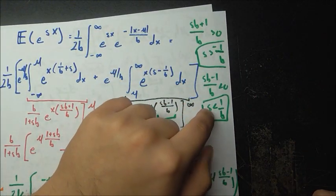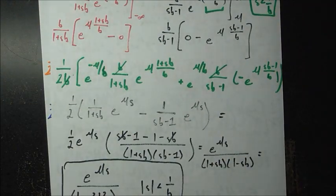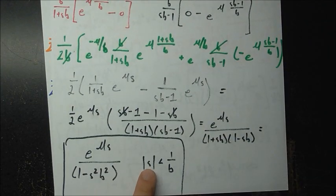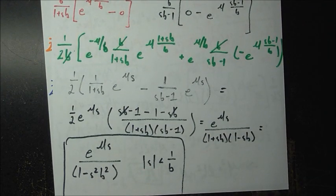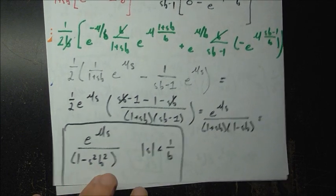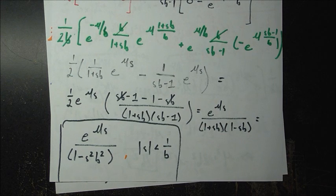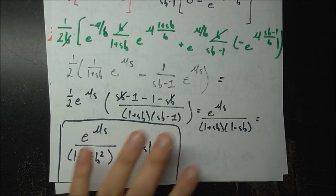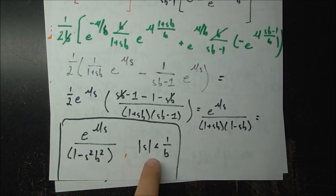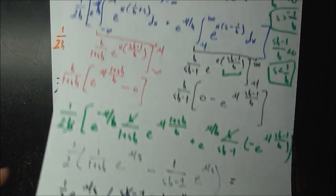Combining both conditions compactly, we get that the absolute value of s must be less than 1 over b. This is the condition for the MGF to hold. If it is not satisfied, one of those integrals goes off to infinity and the whole thing does not converge, so we only have an MGF in this case. If the condition holds, the MGF is e to the mu·s over 1 minus s squared·b squared.